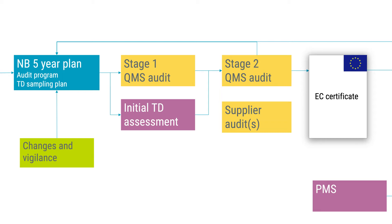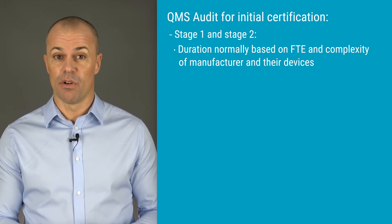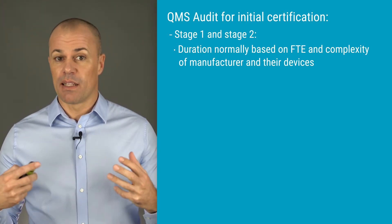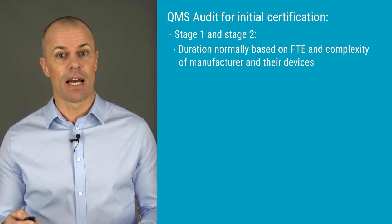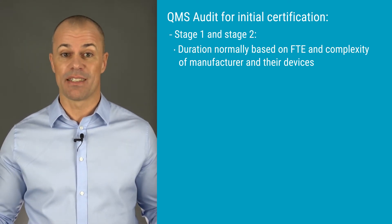My best tip to all manufacturers is to send in only complete and well-structured technical documentation to avoid delays. When the stage two audit has been performed, any non-conformities have been properly addressed, and the initial TD assessment is reported with any potential non-conformities addressed, then the first MDR EC certificate can be granted by the notified body. The extent of initial and coming audit activities normally depends on the size of the manufacturer and the extent of their QMS. For a manufacturer with approximately 10 employees, the initial audit will take somewhere around 5 days in total, and for a manufacturer with 100 employees, approximately double.